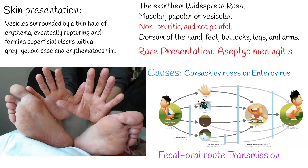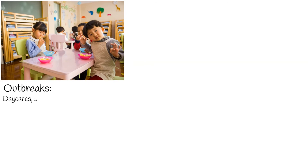Coxsackieviruses are divided into A and B groups, each with several serotypes. Hand, foot, and mouth disease is commonly caused by coxsackievirus A type 16, but can also be caused by many other strains of coxsackievirus and enterovirus. This infection is not indigenous and can occur worldwide, but most commonly correlates with outbreaks in daycares, summer camps, or within families. It is more common among children under age 10 than adults.